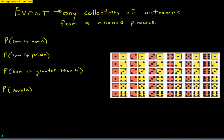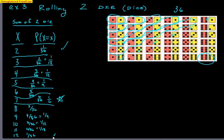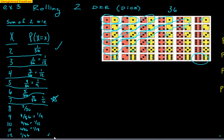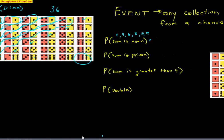Now let's talk about events. Events are any collection of outcomes. Now that we understand that in a chance process we have a bunch of outcomes, an event is any collection of outcomes — meaning grouping them together. For example, if we ask what's the probability the sum is even when rolling 2 dice, we're talking about the sum being 2, 4, 6, 8, 10, or 12. So we look at those options in our chart and add them together.